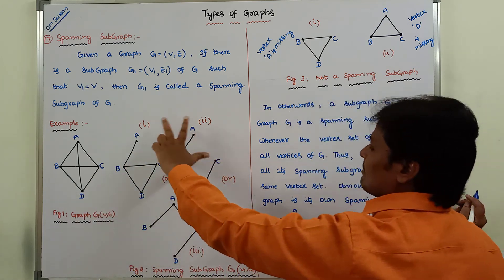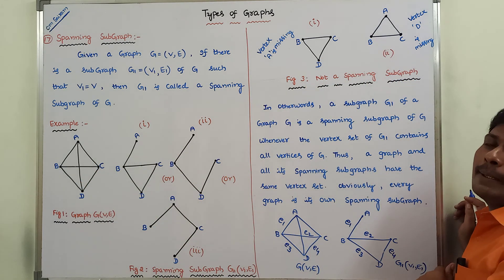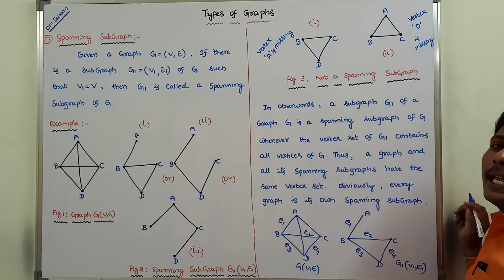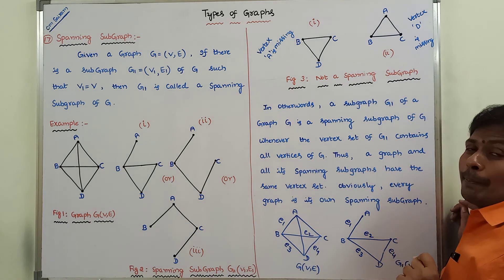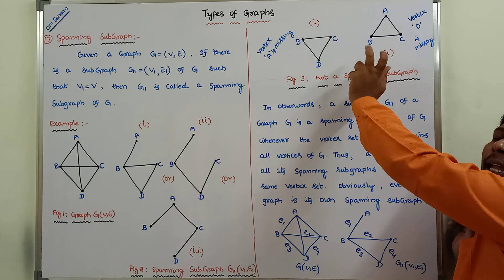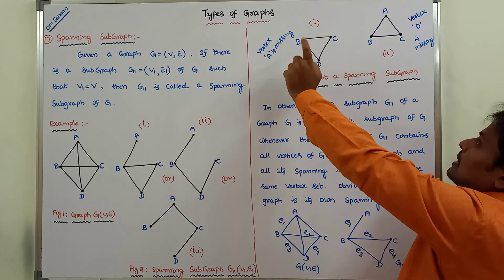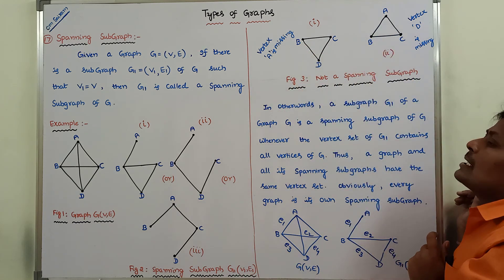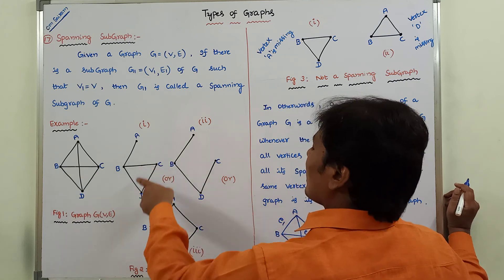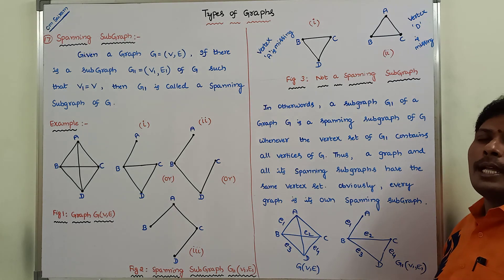So these three are the spanning subgraphs of this graph. But these two graphs are not spanning subgraphs — in this graph vertex A is missing, and in this graph vertex D is missing. To become a spanning subgraph, whatever vertices are present in the main graph G, the same vertices should be there in the subgraph G1. Hence we can say that these two are not spanning subgraphs of this graph, while these three are called the spanning subgraphs. This is the introduction about the spanning subgraph.